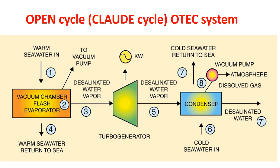The first one is the open cycle OTEC system. The open cycle consists of the following steps: flash evaporation of a fraction of the warm sea water by reduction of pressure below the saturation value corresponding to its temperature; expansion of the vapor through a turbine to generate power; heat transfer to the cold sea water thermal sink resulting in condensation of the working fluid; and compression of the non-condensable gases to the pressure required to discharge them from the system. In the case of a surface condenser, the condensate or desalinated water must be compressed. This is the open cycle OTEC.